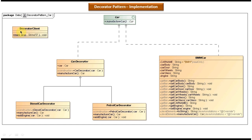On the top left you can see the decorator client, which has the main method. This class is used to demonstrate the decorator design pattern. I will open Eclipse and show you the code so that you will understand very clearly.